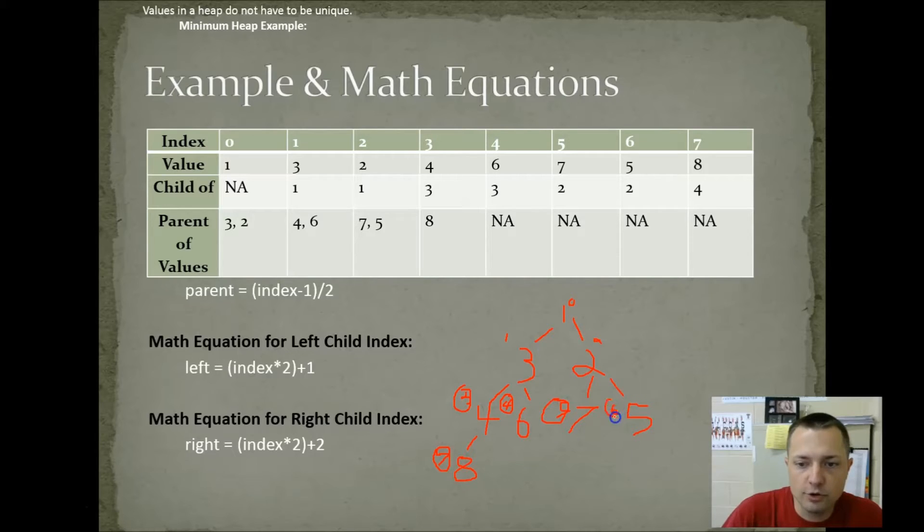When you're working with a heap, frequently you're going to have to figure out who your parent is or who your children are. So, there are math equations for it. Your parent index is your index minus 1 divided by 2. So, let's just look at 6. 6 minus 1 is 5. Divided by 2 is 2 point, who cares, because it's truncated, 2. But would a 5 work? 5 minus 1 divided by 2. So, 4 divided by 2 is 2. This is how you calculate your parent. If you want to know where your left child is, you multiply your index by 2 and add 1. So, here's 3. 2 times 3 is 6 plus 1 is 7. That's where his left child is. If you want to know where your right child is, it's your index times 2 plus 2.